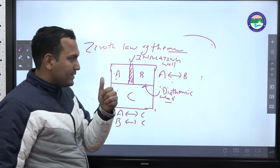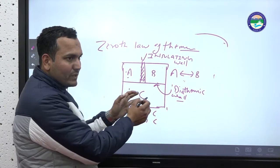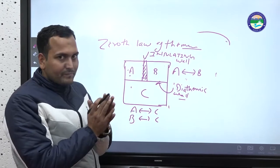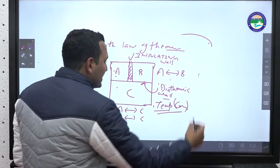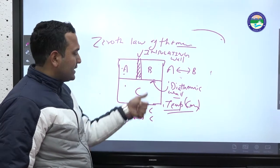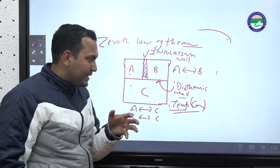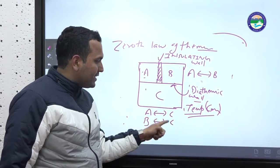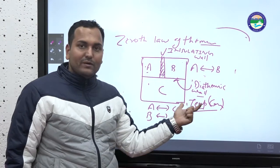We have discussed thermal equilibrium: heat flows from A to C and B to C until equilibrium is reached. The last topic is the concept of temperature. The zeroth law of thermodynamics gives us the concept of temperature. When two systems are in thermal equilibrium, there is a quantity that is equal between them — and that quantity is called temperature.